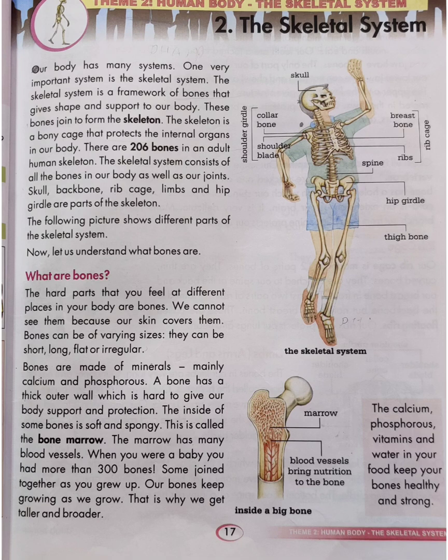Now let us understand what bones are. The hard parts that you feel at different places in your body are bones. We cannot see them because our skin covers them. Bones can be of varying sizes — they can be short, long, flat or irregular. Bones are made of minerals, mainly calcium and phosphorus.